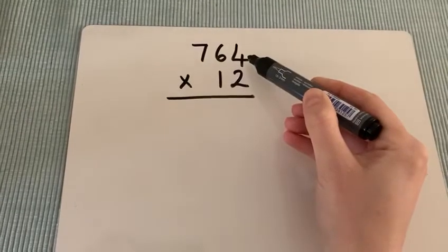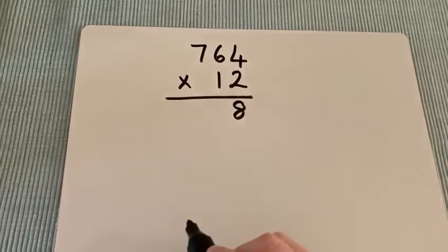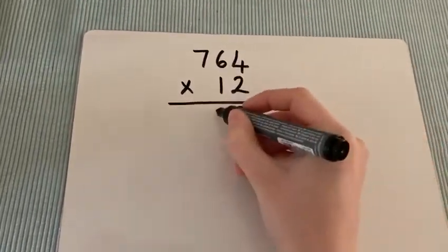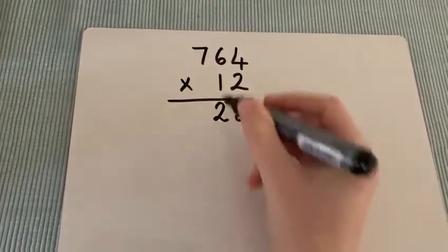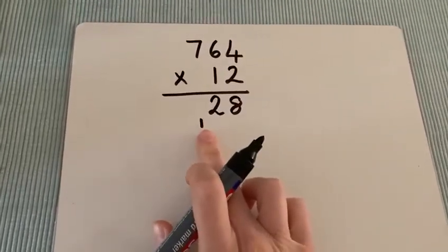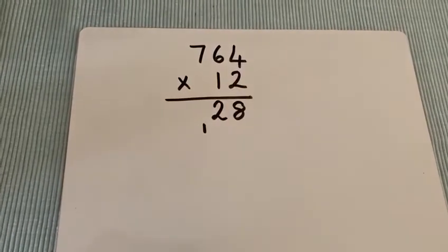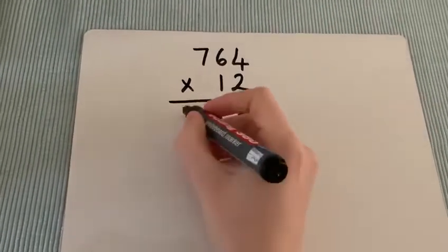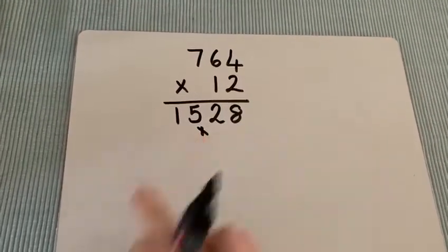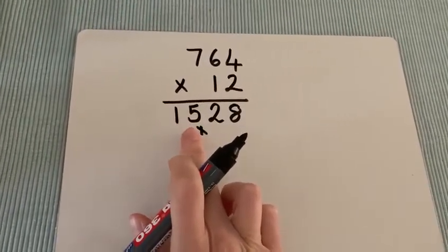So we start with 4 times 2. 4 times 2 is 8. Then 6 times 2. 6 times 2 is 12. The 2 comes in and because you've got another number to deal with, we're going to bring the 10 down, represented as a 1 here. Then 7 times 2. 7 times 2 is 14 plus the 1 gives us 15. We cross out the 1 so that we know that we've used it and our answer is currently 1528.